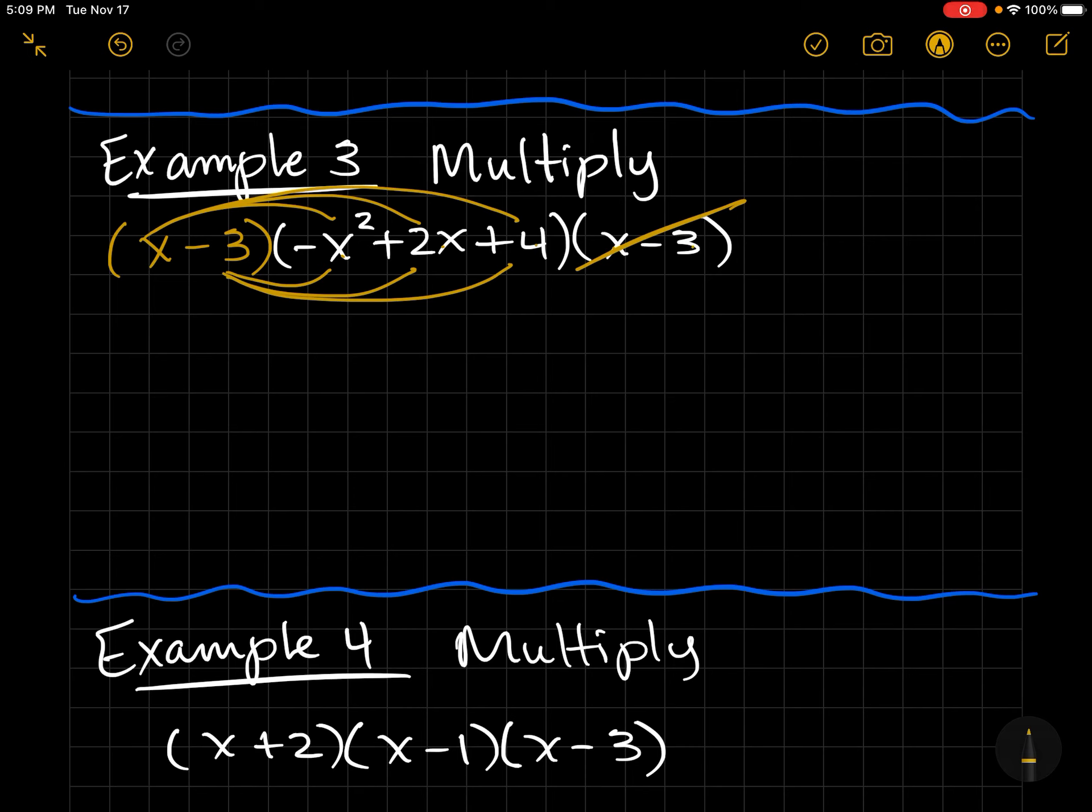Anyway, so distributing my x, I have negative x³. Doing the next term, I have a positive 2x². And then doing the x to the third term, I have 4x.